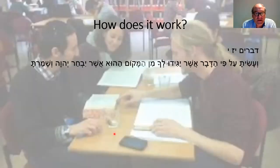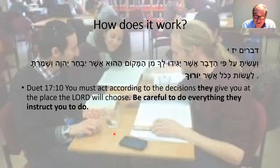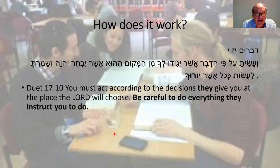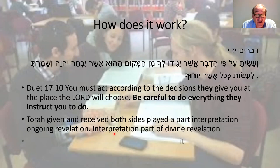The basis of the right to read, understand, and interpret the Torah comes from Deuteronomy 17: 'You must act according to decisions they give you at the place the Lord will choose. Be careful to do everything they say — v'asita kechol asher yorucha, they shall teach you.' In other words, everybody has the right to learn, teach, and interpret as long as they stay within certain limitations. The Torah given and received — both sides play a part. There's an ongoing revelation; the person's ability to understand is a God-given, divine, continuing element that enables interpretation.